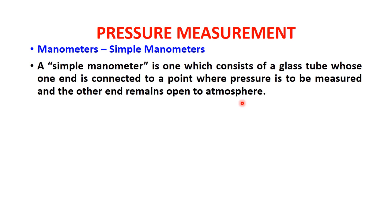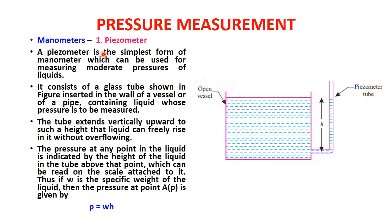The manometer may use the same liquid whose pressure is to be measured, or another liquid, to balance the liquid column. The reading is obtained from the balancing of two liquids. The pressure difference is created between the measurement point and atmospheric pressure, allowing us to determine the pressure.